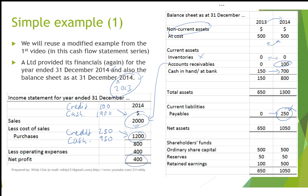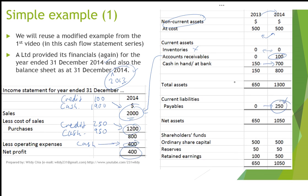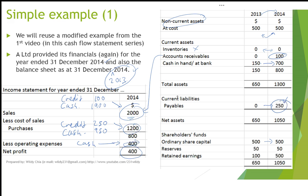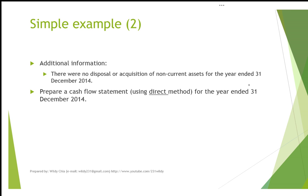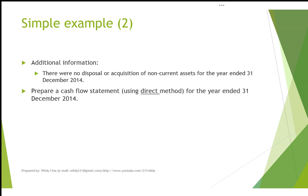For operating expenses, there are no accrued expenses here, so it seems all operating expenses are fully paid in cash. Shareholder funds show no change; reserves remain constant. Retained earnings increased from $100 to $500 due to the additional profits of $400. The additional information states there are no disposals or acquisitions of non-current assets for the year ended 31st December 2014.